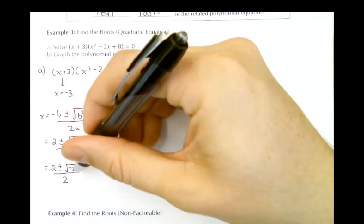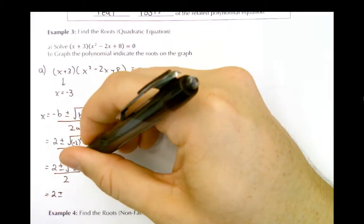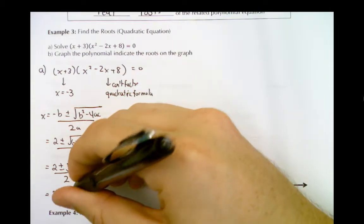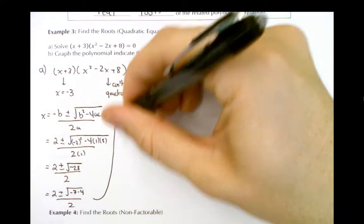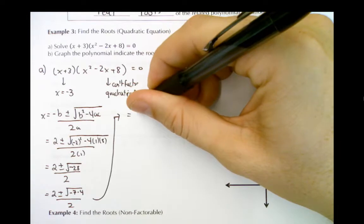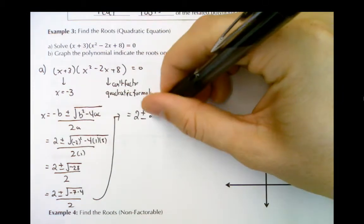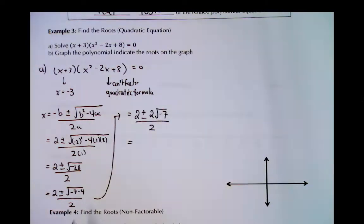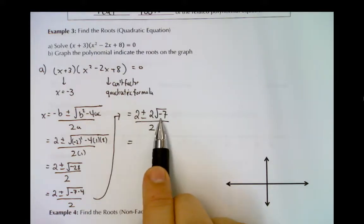We can simplify the square root of negative 28 by splitting it into factors. Negative 28 is the same as negative 7 times 4, and we can take the square root of 4 to get 2. So we have 2 plus or minus 2 times root 7, divided by 2. The reason we factor out the 4 is because we can square root 4 and get 2.